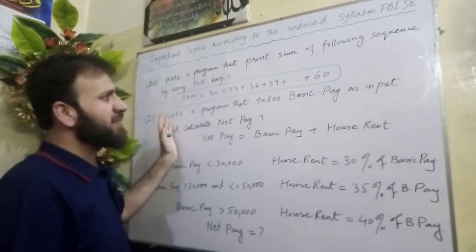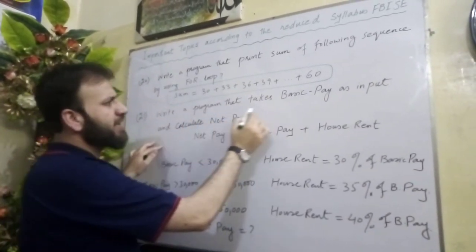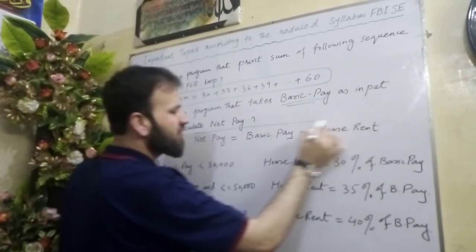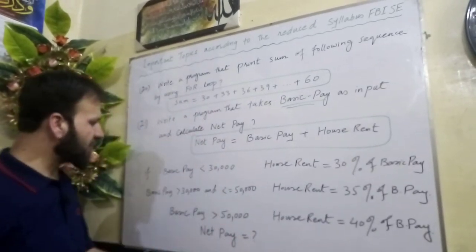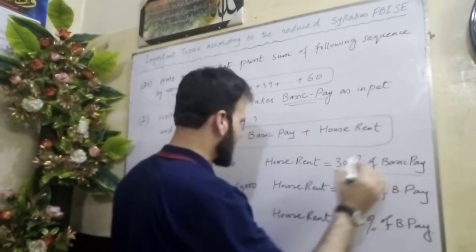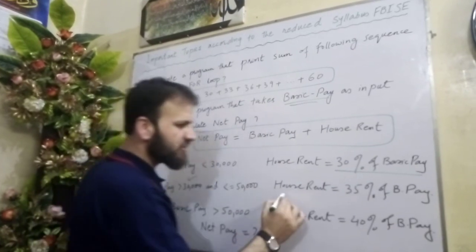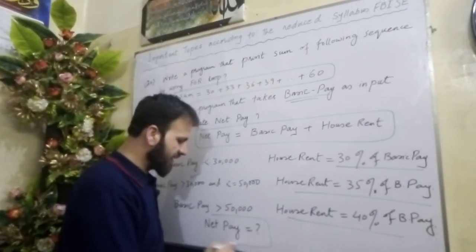Similarly, the lab activity for chapter four, question twenty-one: write a program that takes basic pay as input and calculates net pay. The conditions are: if basic pay is less than 30,000, house rent is 30% of basic pay; if basic pay is greater than 30,000 and less than 50,000, house rent is 35% of basic pay; if basic pay is greater than 50,000, house rent is 40% of basic pay. You have to calculate the net pay accordingly.